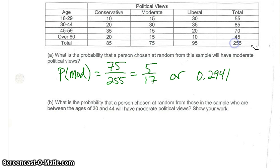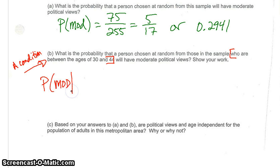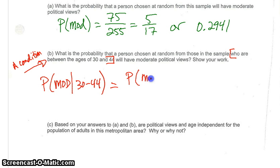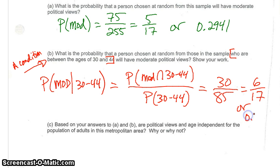For part two: what is the probability that a person chosen at random from those in the sample who are between the ages of 30 and 44 has moderate political views? This is a conditional probability — the probability of moderate given 30 to 44. That equals the probability of moderate intersecting 30 to 44 over the probability of 30 to 44. The total for 30 to 44 is 85, and the intersection of moderate and 30 to 44 is 30, giving us 30/85, which equals 6/17, or 0.3529.